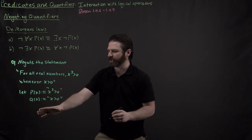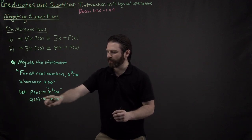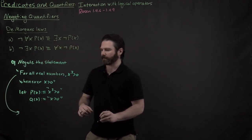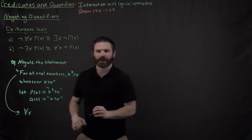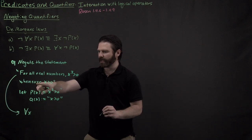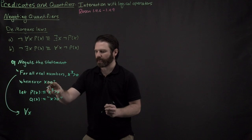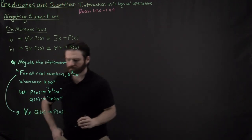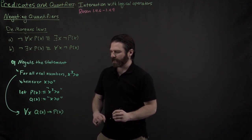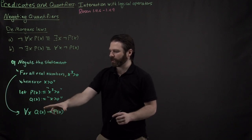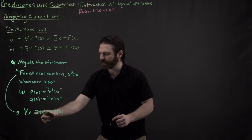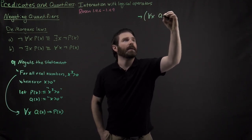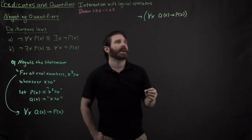I define my propositional functions: p(x) is 'x cubed greater than zero' and q(x) is 'x greater than zero.' Translating the statement: for all real numbers x, recalling that 'whenever' means the implication goes the other way, q(x) is the hypothesis and p(x) is the conclusion, giving us: for all x, q(x) implies p(x). Now what I want to do is negate this statement — negate 'for all x, q(x) implies p(x).'